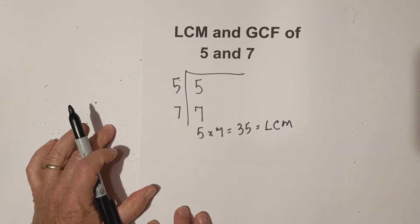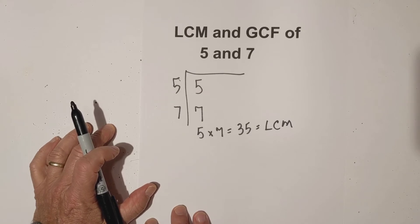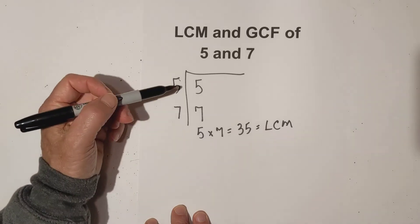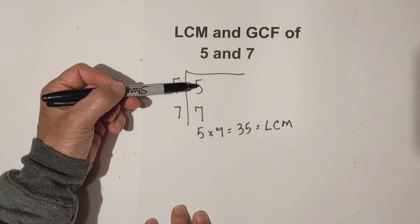Now I can use the very same chart to find the greatest common factor. And the rule for the greatest common factor is you only multiply or use a number if you have 2 or more.